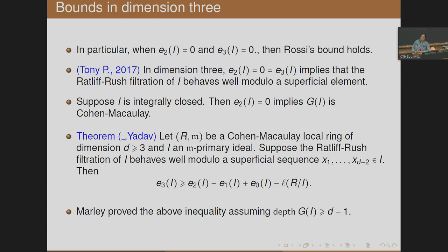The core difficulty is that the Ratliff-Rush filtration does not behave well with respect to superficial elements. One sufficient condition is when E_2 and E_3 vanish; Toni proved that in dimension 3, if E_2 = E_3 = 0 then the Ratliff-Rush filtration behaves well modulo a superficial element. However, for integrally closed ideals, E_2 = 0 implies G(I) is Cohen-Macaulay — a very strong condition. So for integrally closed ideals, we looked for necessary and sufficient conditions for the Ratliff-Rush filtration behaving well modulo a superficial element.